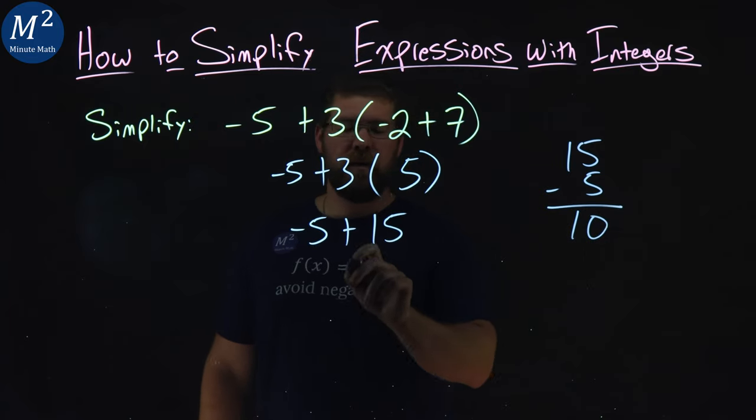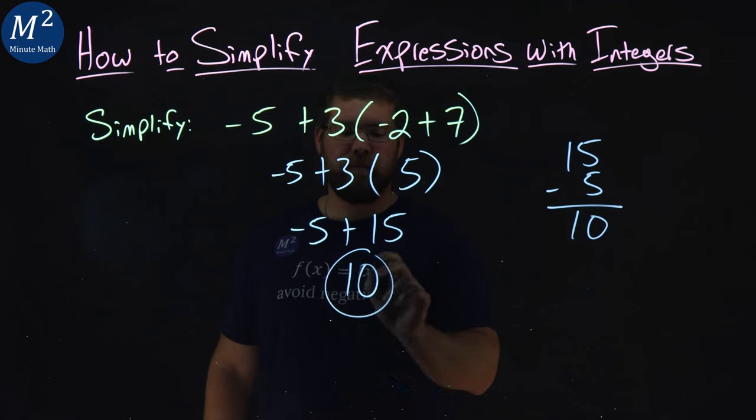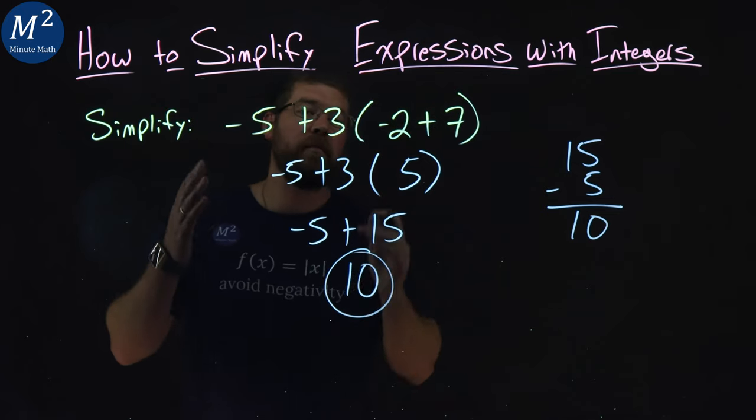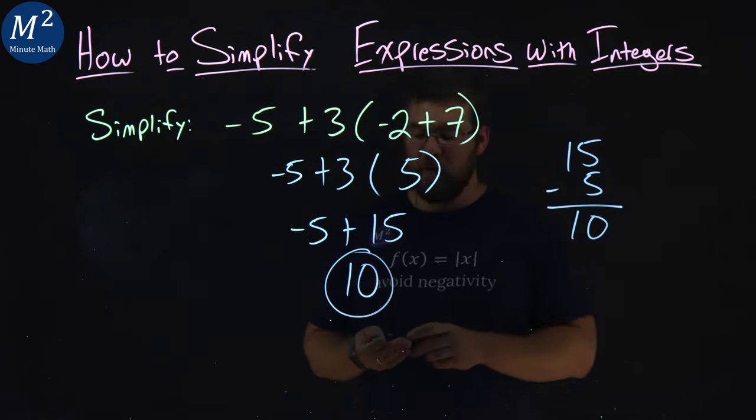So negative 5 plus 15 equals positive 10, and there we have it. We simplified this expression and got a final answer of 10.